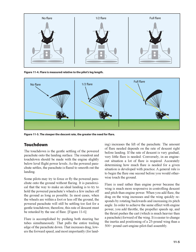Touchdown: The touchdown is the gentle settling of the powered parachute onto the landing surface. The roundout and touchdown should be made with the engine slightly below level flight power levels. As the powered parachute settles, the parachute is flared to smooth out the landing. It is paradoxical that the way to make an ideal landing is to try to hold the powered parachute's wheels a few inches off the ground as long as possible. When the wheels are within a foot or less off the ground, the powered parachute will still be settling too fast for a gentle touchdown. Therefore, this rate of descent must be retarded by the use of flare.